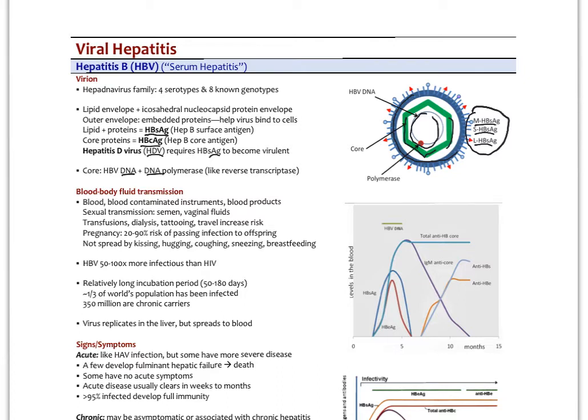The transmission here is blood or body fluid transmission. We're a lot more worried about this in the healthcare setting, especially with needle stick injuries. It can be transmitted through sexual transmission, semen, vaginal fluids, as long as there's an opening in the mucosa. Any direct blood contact can cause that: transfusions, dialysis, tattooing, travel all increase the risk. There's up to 90% risk of passing the infection to the offspring in pregnancy.